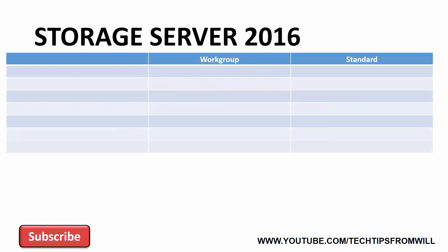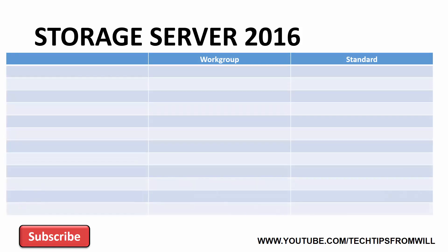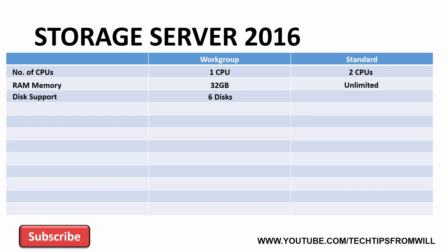Let's look at some of the differences between the two editions. The first difference is the number of CPUs. With the Workgroup edition, just one CPU is supported, whereas the Standard edition can address up to two CPUs. When it comes to RAM memory, the Workgroup edition can address up to 32GB of RAM, whereas the Standard edition supports an unlimited amount of RAM. In terms of disk support, Workgroup can support a maximum of six disks, making it suitable only for smaller storage devices, whereas Standard supports an unlimited number of disks.